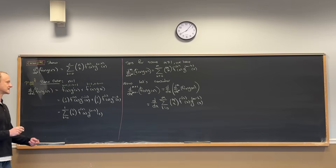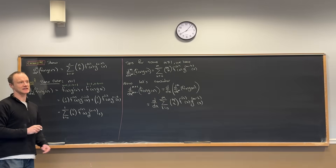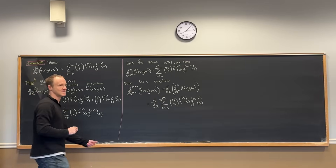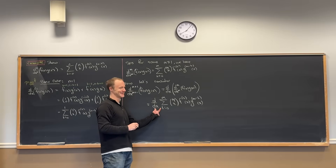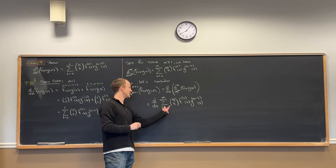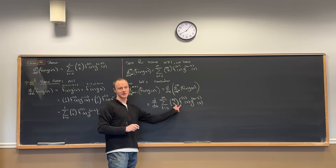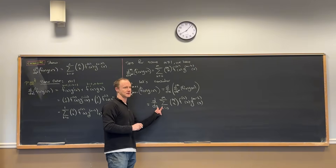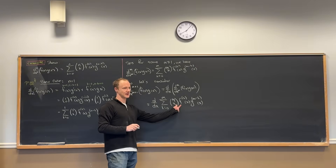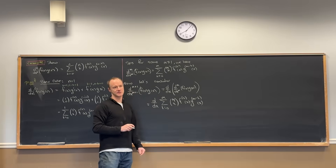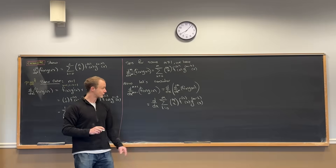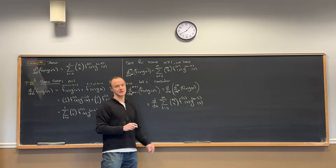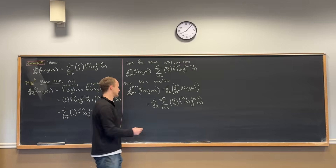But the derivative is a linear transformation. That means we can take the derivative inside of the sum, and then the derivative will act on the product terms. Then we can use the product rule when the derivative acts on them — that's going to split it into two pieces.